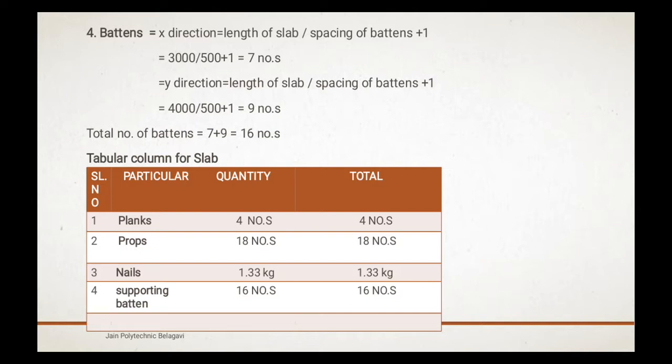Tabular column for slab: serial number, particular, quantity, total. Planks, 4 numbers; props, 18 numbers; nails, 1.33 kg; supporting battens, 16 numbers.